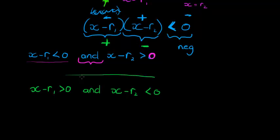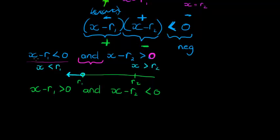Let's draw this on a number line, assuming r1 is smaller than r2. For the first case: (x − r1) < 0 means x < r1, and (x − r2) > 0 means x > r2. So we need x smaller than r1 AND x greater than r2.